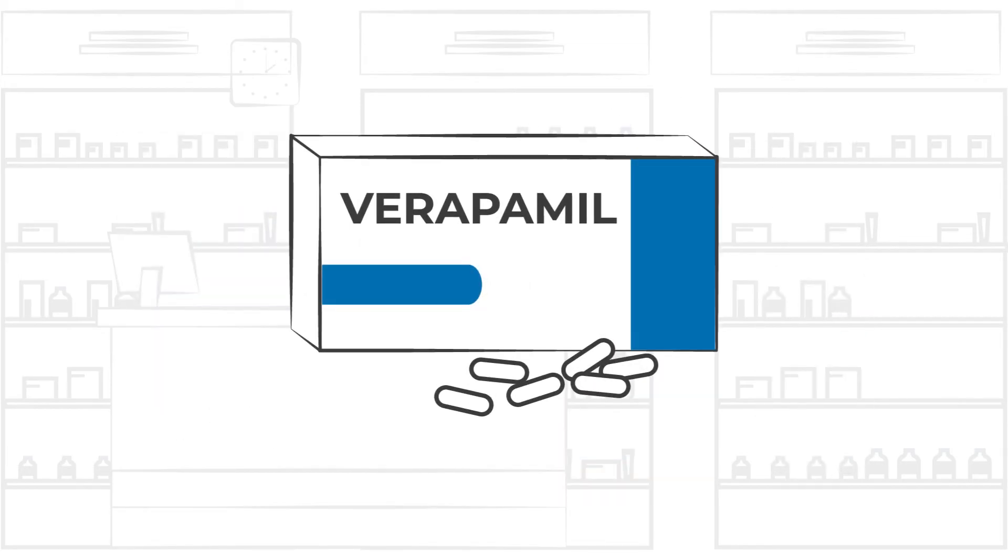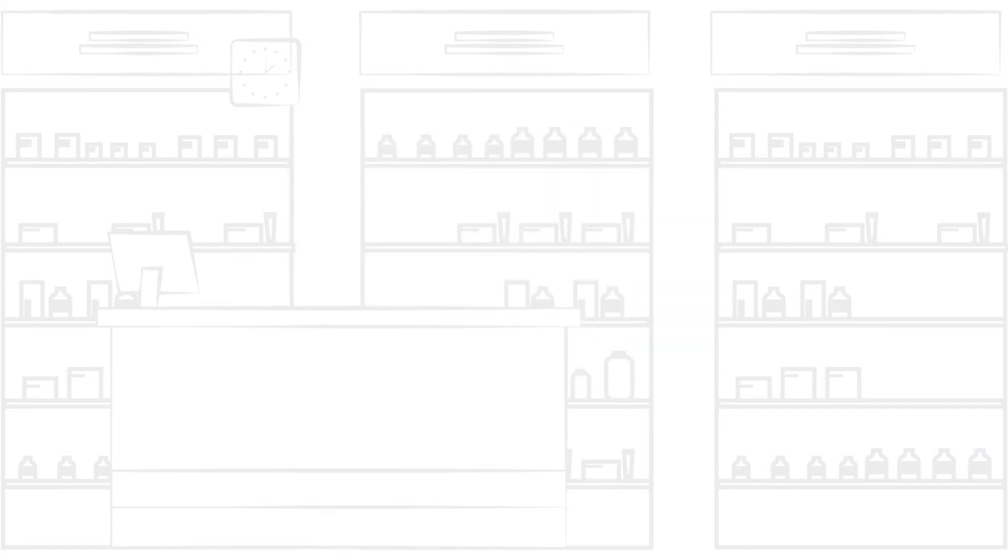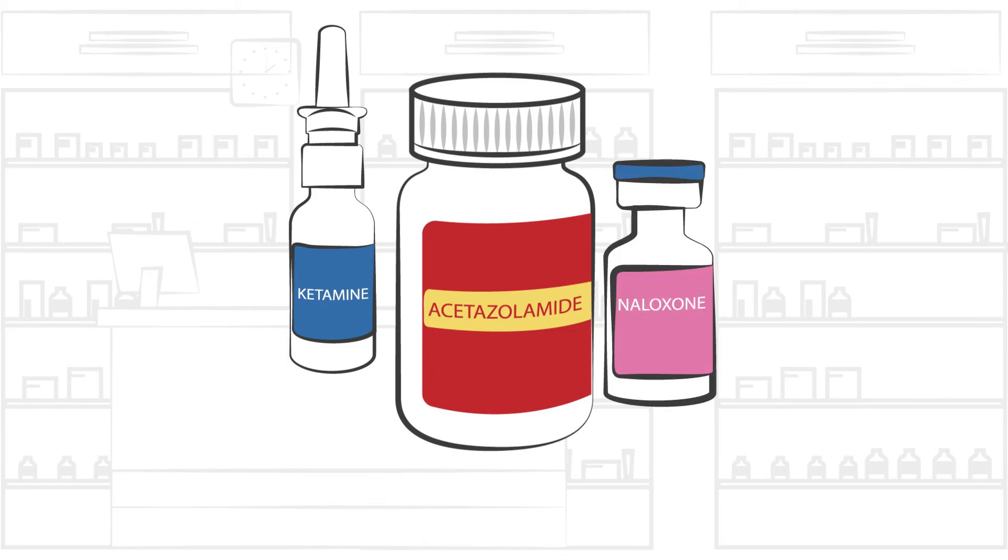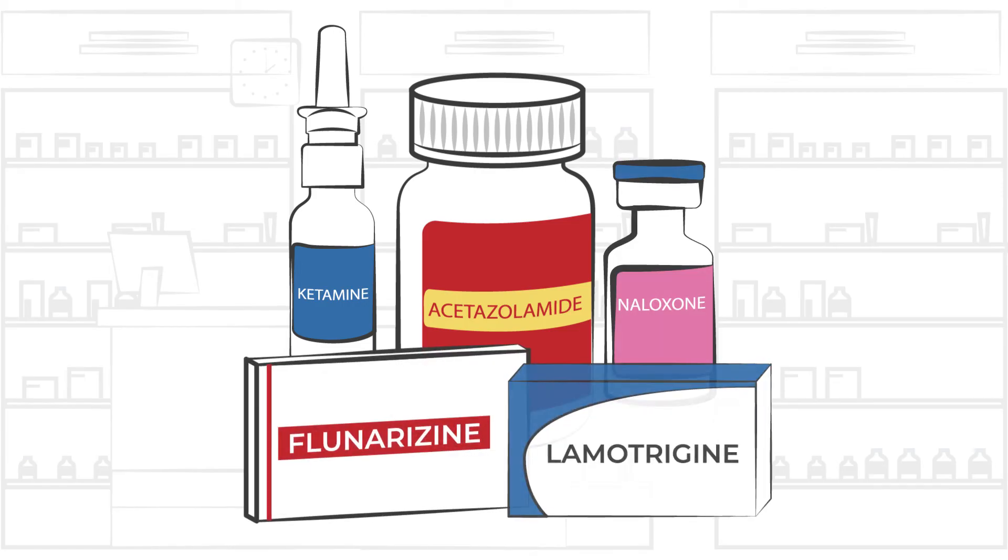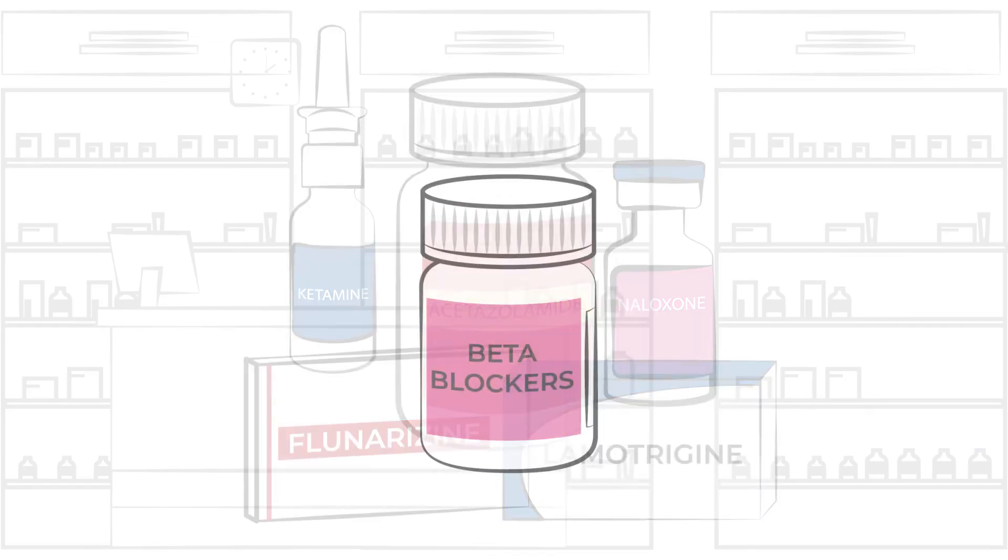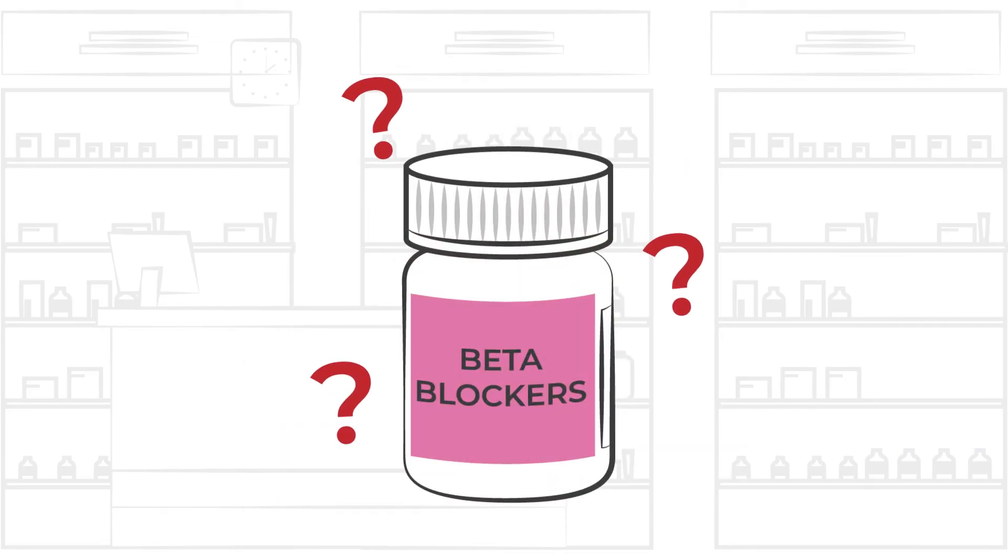Verapamil can also be used as a preventative therapy. Other preventative options include ketamine, acetazolamide, naloxone, flunarizine, and for non-responders, lamotrigine may be effective. For prevention, beta blockers remain controversial.